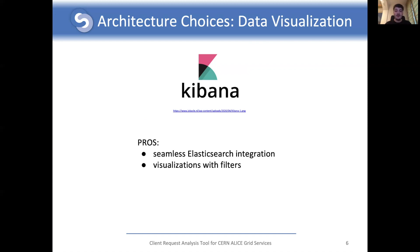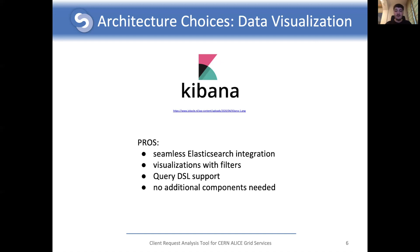Also, every visualization on Kibana's dashboard can have filters applied, such that for example a pie chart with the most active users applied to all request types can be filtered to a single request type, easily getting information about the most users that issue a particular type of request. There is also support for Elasticsearch's fast query DSL, meaning that a developer can track down a specific request ID. Last but not least, there is no need to set up additional infrastructure components since Kibana stores its internal configuration in Elasticsearch.